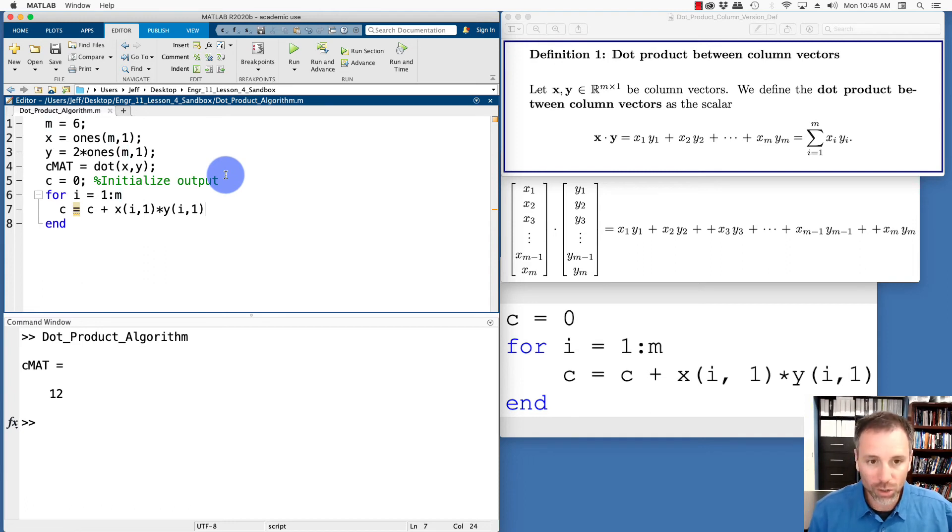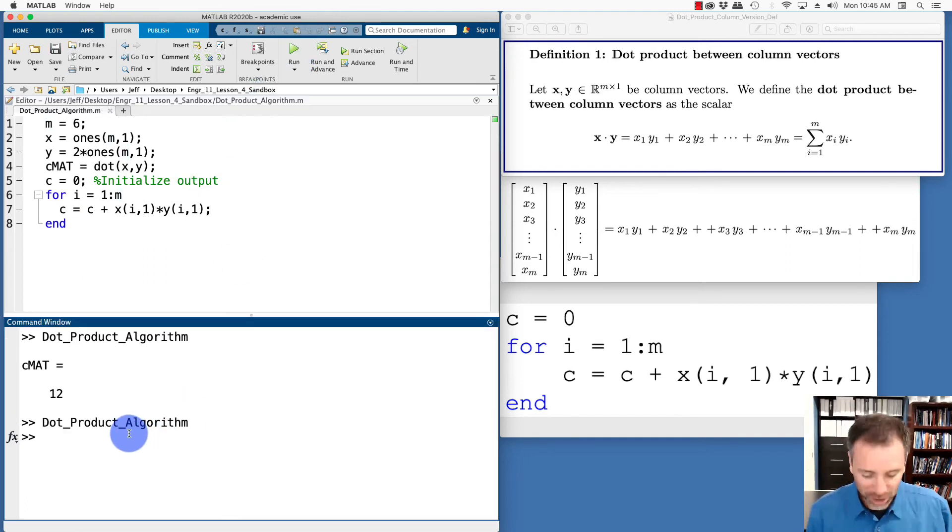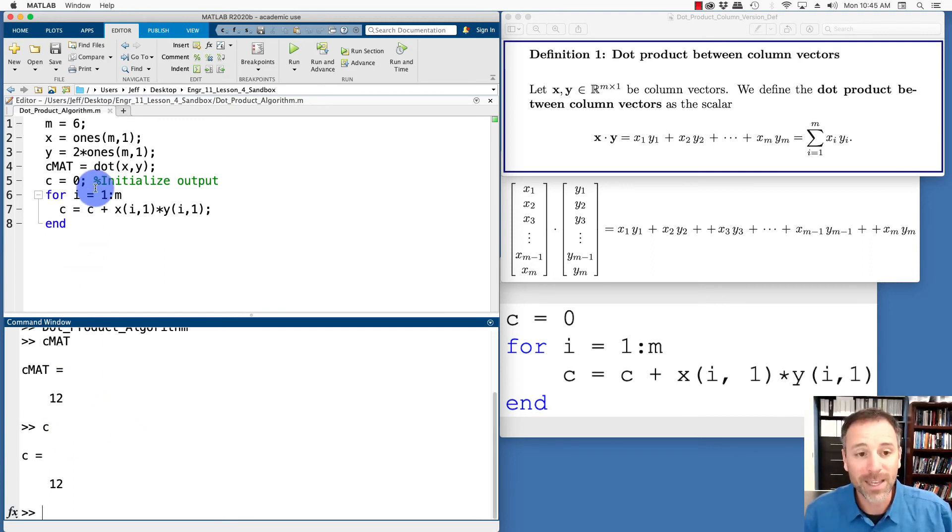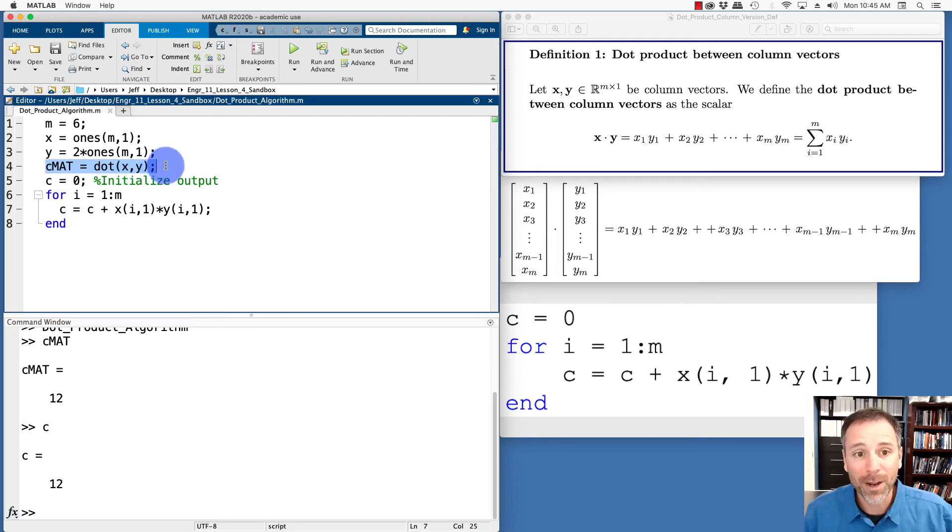One of the nice things we can do to check our work is to run this, and then let's check the difference between cmat and c. Notice that they're the same thing. In other words, MATLAB's dot product function achieves the exact same results as this algorithm that we've done here.